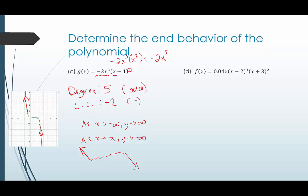Last, f of x equals 0.04x times the quantity x minus 3 squared times the quantity x minus 2 cubed times the quantity x plus 3 squared. Since this is in factored form, we multiply the largest term from each factor: 0.04x times x cubed times x squared, which gives 0.04x to the sixth. So this is a degree six polynomial with a leading coefficient of 0.04.